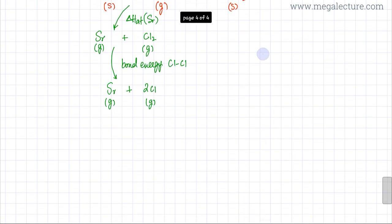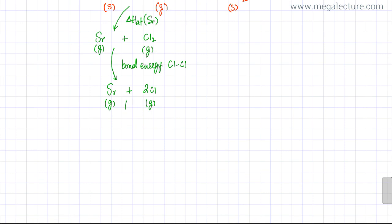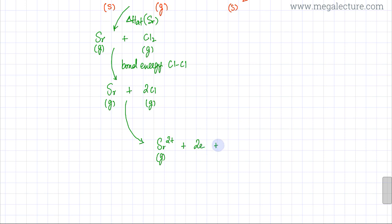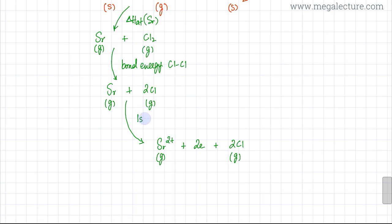The next step is converting the strontium gaseous atom into an ion. It forms the Sr²⁺ ion in gaseous state by losing two electrons, while chlorine remains unchanged. This path corresponds to the first and second ionization energies of strontium, since strontium ends up losing two electrons.